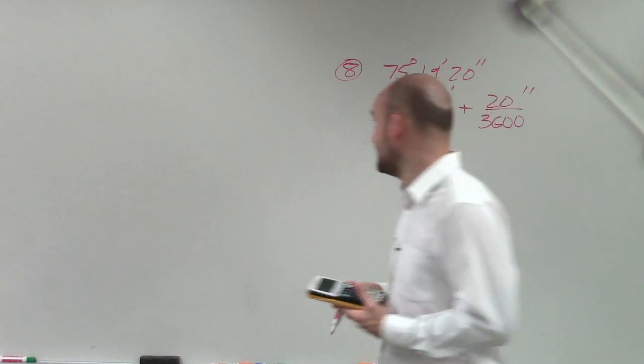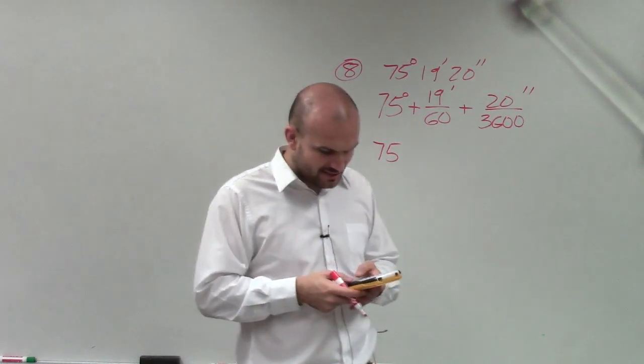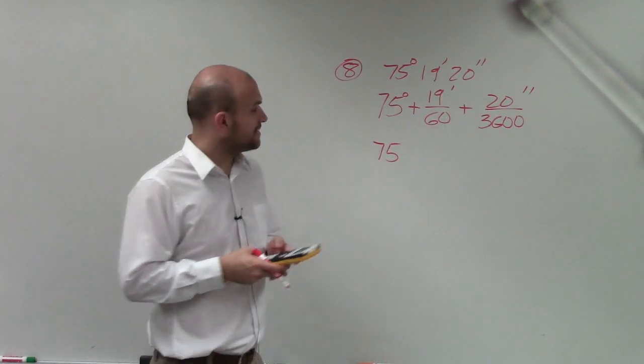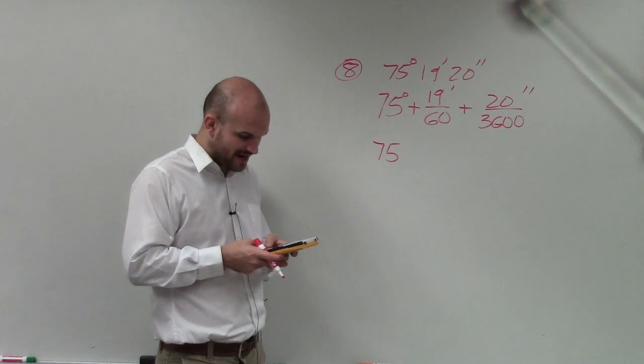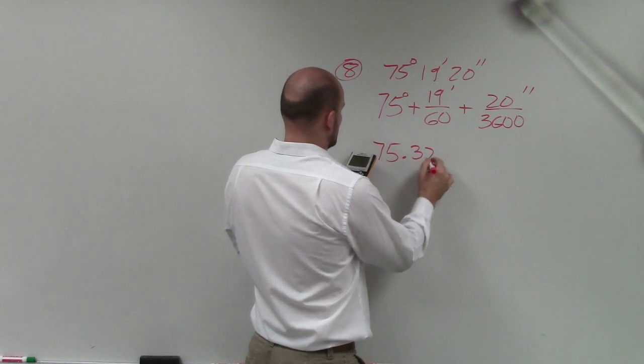So now I need to find the decimal version of this. What I'm going to do is take 19 divided by 60 and add that to 20 divided by 3,600. And that gives me 75.322.